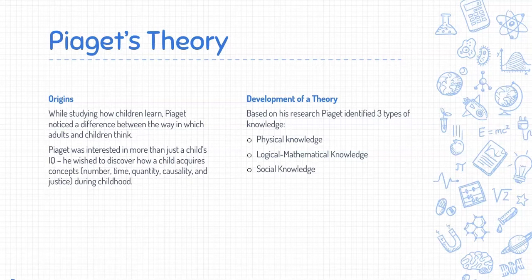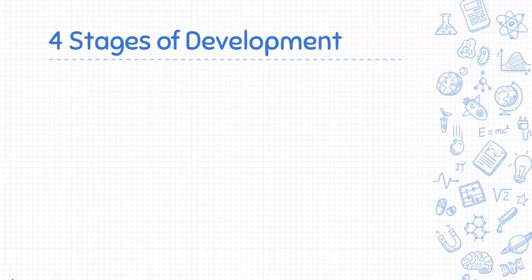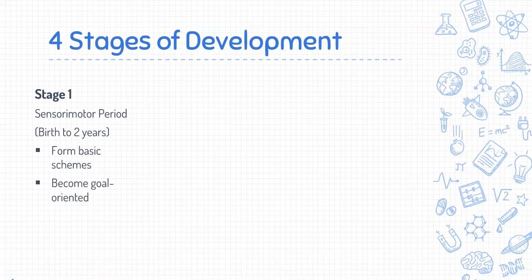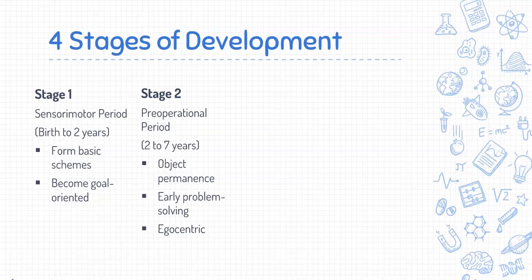Recognizing these types of knowledge and how they are gained led him to propose four stages of development in a child's cognitive growth. These four stages are: the sensory motor period, during which a child forms basic schemes and becomes goal-oriented; and the pre-operational period, which we will be focusing on, where the child begins to understand object permanence, develop early problem-solving, and display egocentric behavior.